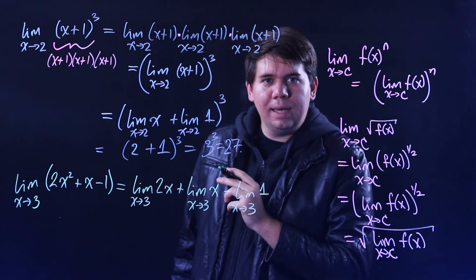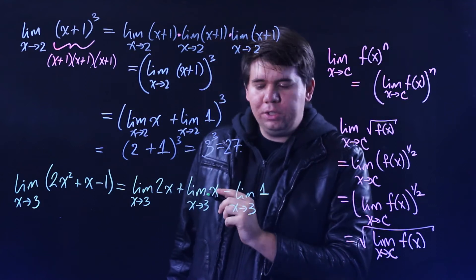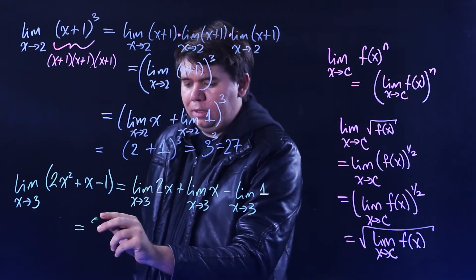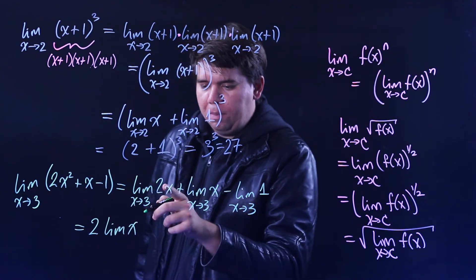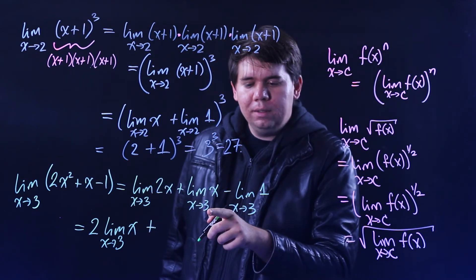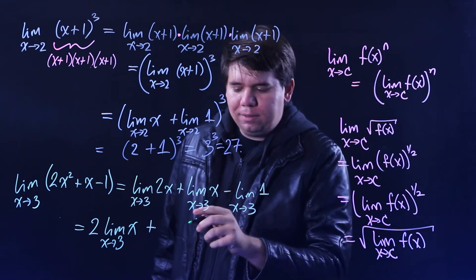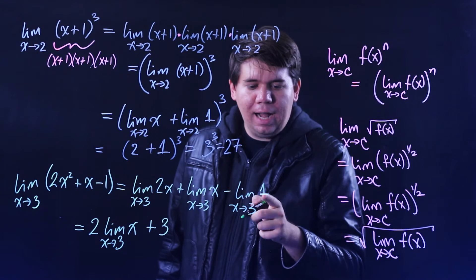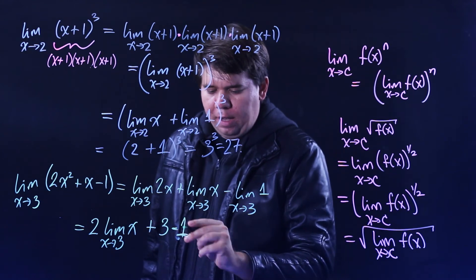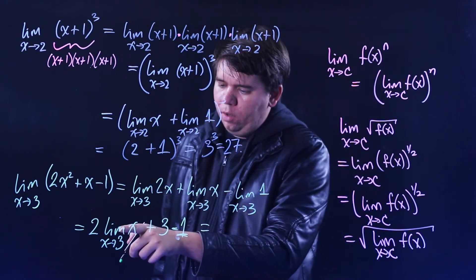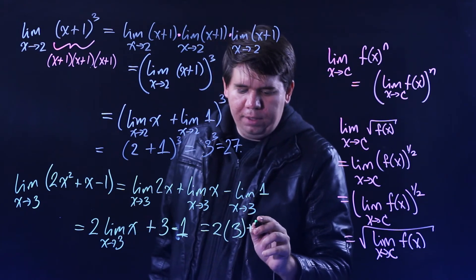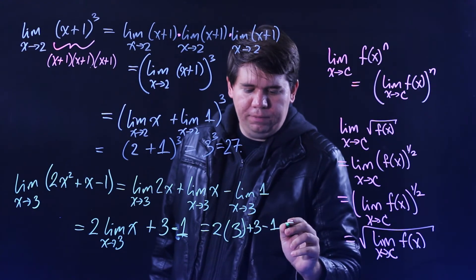The limit of 2 times x squared — that uses our limit law for a constant times a function. If you have a constant times a function, the limit is just the constant times the limit of the original function, so you can pull the 2 out. The limit of x as x approaches 3 is just 3. The constant function 1 is always 1. So we get 2 times 3, add 3, and subtract 1.